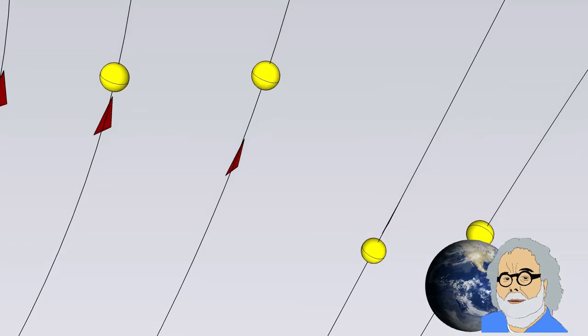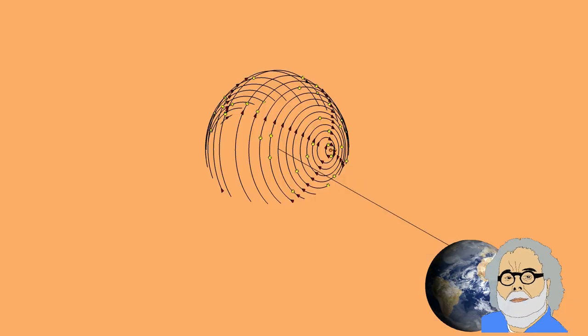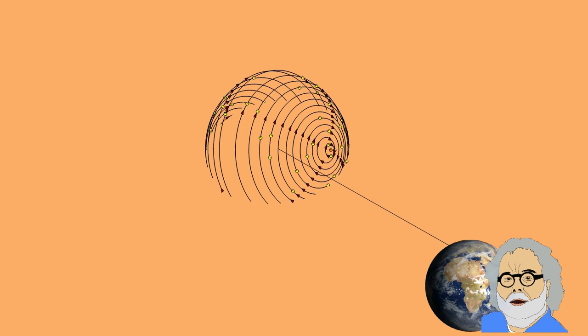There are other problems too. First of all the eccentric position of Polaris in this model. This would mean that the north pole lying straight beneath Polaris would also be positioned this far away from the center of the dome.